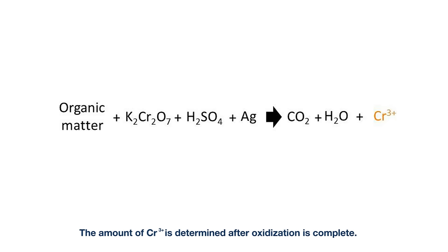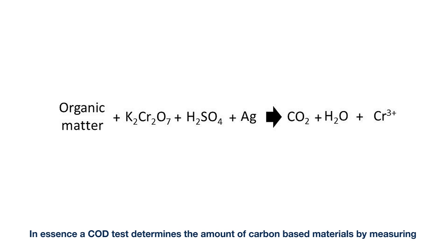The amount of chromium ion is determined after oxidation is complete. In essence, a COD test determines the amount of carbon-based materials by measuring the amount of oxygen the sample will react with.